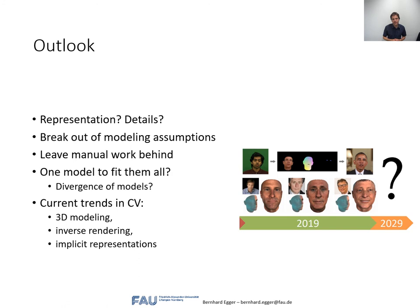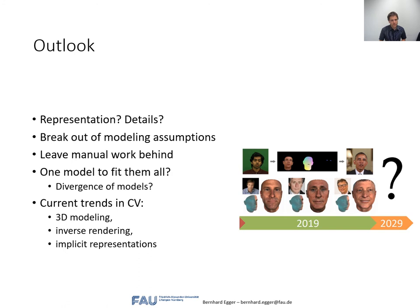At the end of the survey paper we try to imagine how the future could look: how representations might evolve, how to break modeling assumptions, how to reduce manual work in building high-quality 3D morphable models, and whether one model can fill all applications or if application-specific models are needed. Current trends in computer vision — 3D modeling, inverse rendering, and implicit representations — will push 3D morphable models well beyond what they are today.